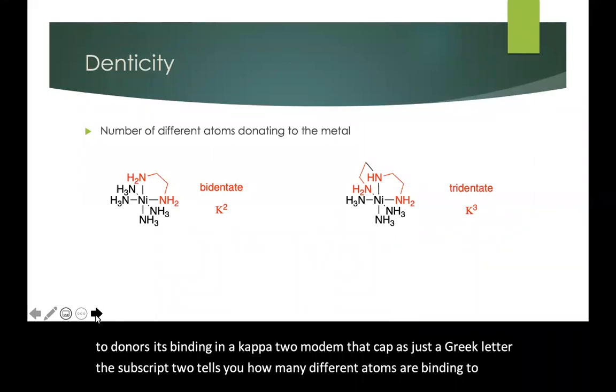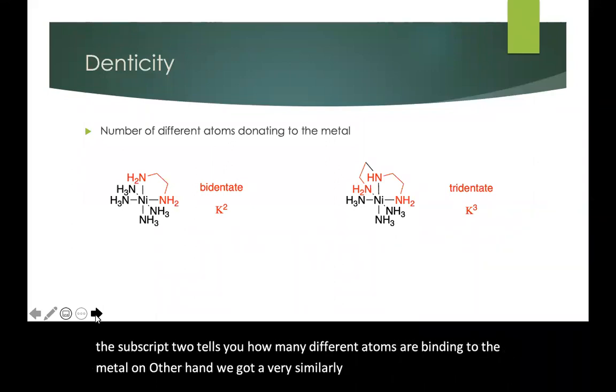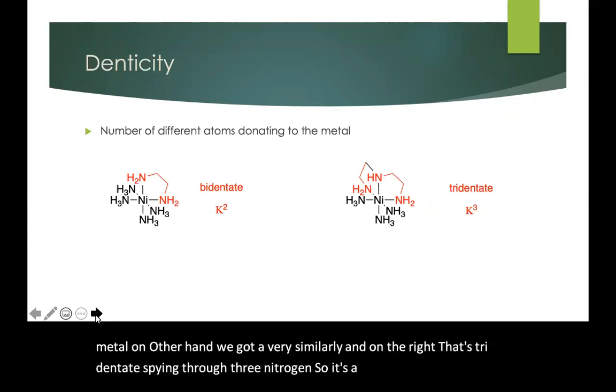On the other hand we've got a very similar ligand on the right that's tridentate. It's binding through three nitrogens so it's a kappa 3 donor in this case.